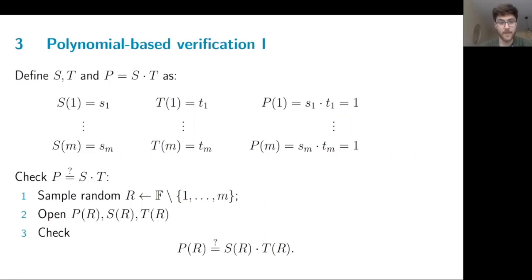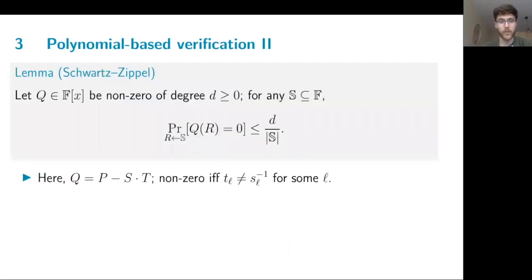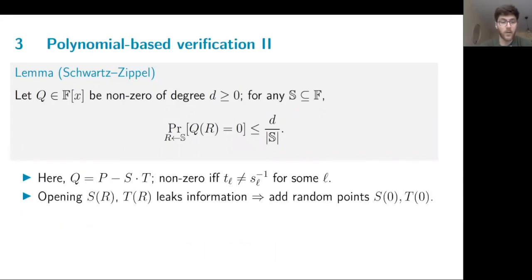Now, what we are left to do is to ask for the proof to check that P is indeed equal to the product of S and T. To do this, we can sample a random element of the field, open the three polynomials at that point, and check that the equality holds for this point. Our soundness bound at this point comes from the Schwartz-Zippel lemma, where we see that a non-zero polynomial has a bounded probability of being equal to zero when evaluated on a random point. In our case, the Q polynomial is defined as P minus S times T, which is non-zero if one of the inverses T has been wrongfully injected. So it's actually not equal to the corresponding input.